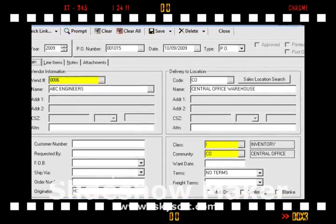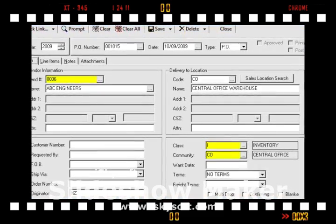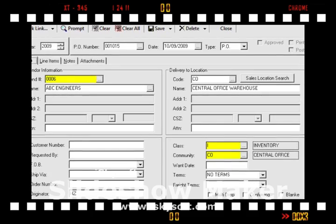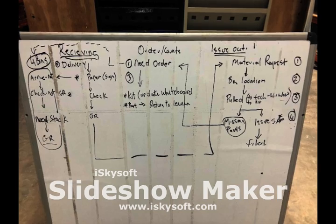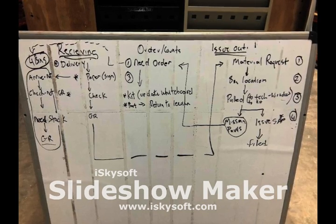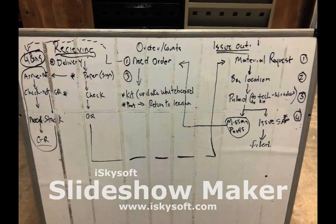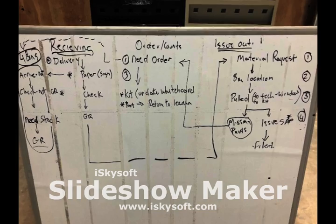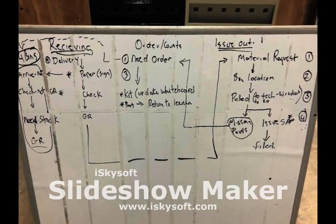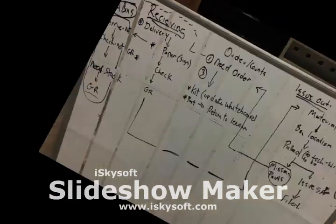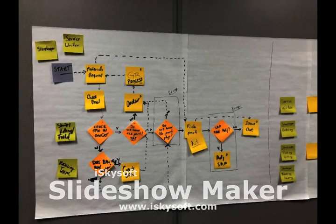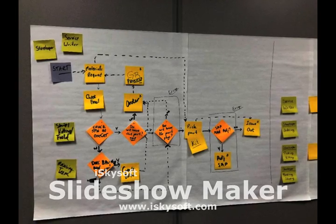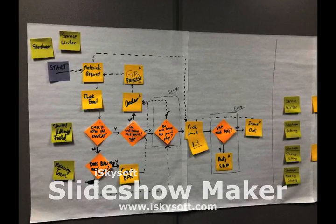Material is transacted and then sent out to support whatever functions the company needs — whether distribution in something like a grocery-type operation, or in the business I'm in, more oil field related, supporting equipment that gets run out in the field, which ultimately supports revenue for the company.